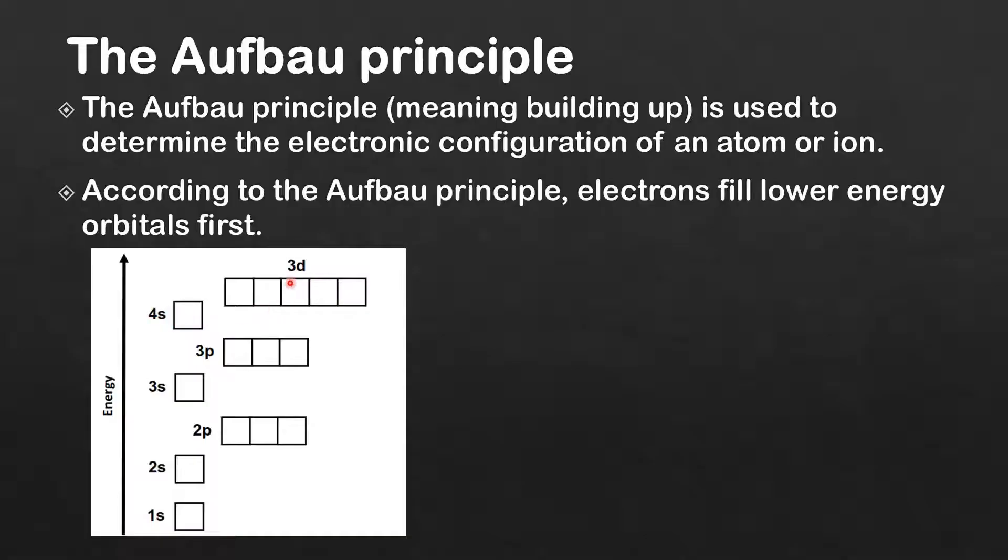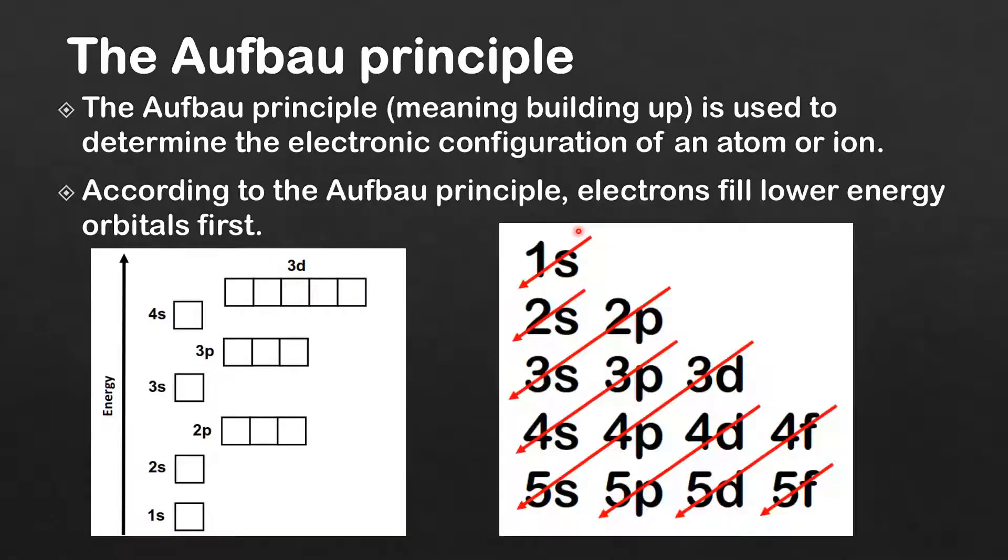The 4s is lower energy than the 3d orbitals. On the right here we have the order of filling of the atomic orbitals according to the Aufbau principle, which is lowest energy first. So we start by filling the 1s atomic orbital.